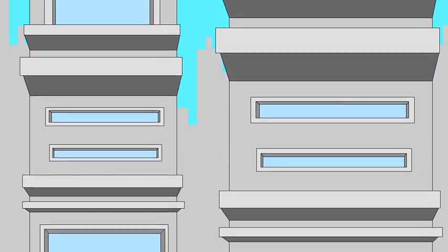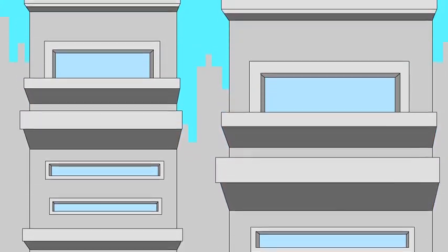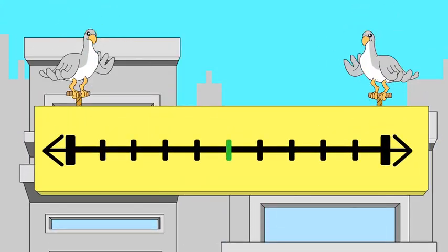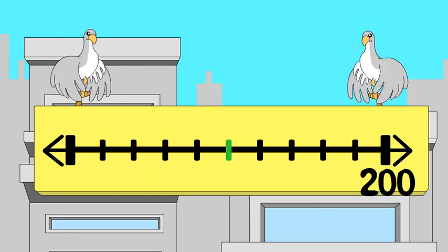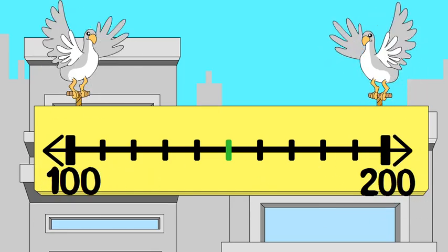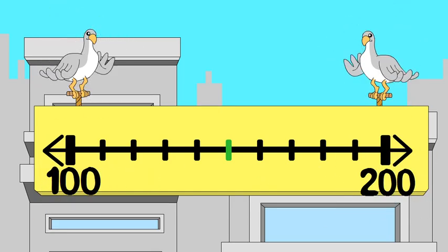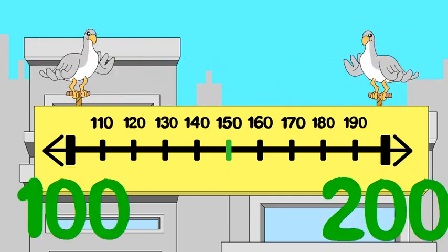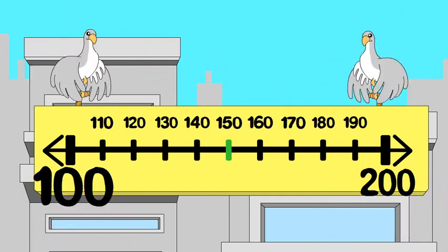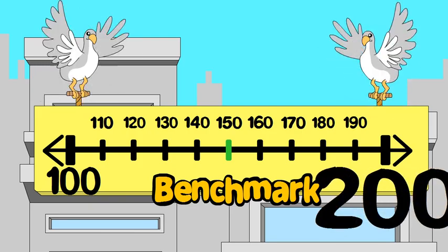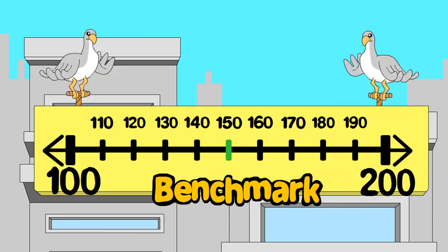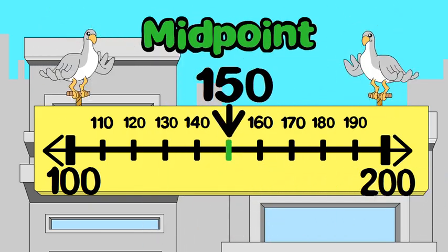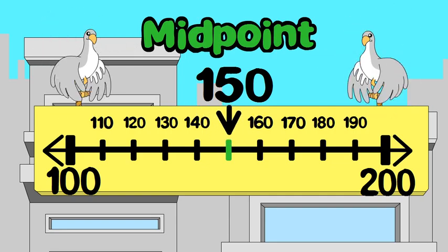Here are some useful things to know. You can show any number on a number line. Numbers to the right have a greater value than numbers to the left. The nearest hundred on either side of our number is a useful benchmark, and the midpoint is the number that is halfway between two benchmarks.